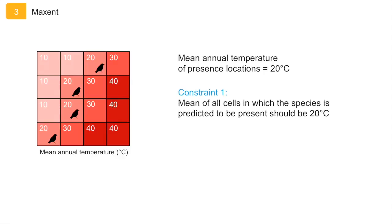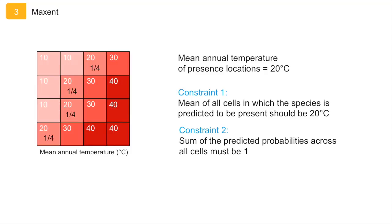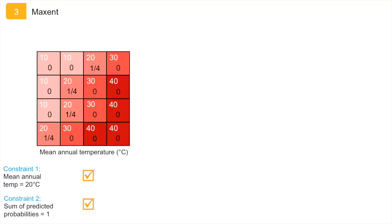The first constraint is that the mean annual temperature of all cells in which the species is predicted to be present must be 20 degrees. The second constraint is that the sum of the predicted probabilities across all cells in the landscape needs to be equal to 1. One of the possible distributions that meets both of these constraints is to give each cell where the species has been observed a probability of a quarter, and the other cells a probability of 0. The mean temperature of the cells in which the species is predicted to be present is 20 degrees, meeting constraint 1, and the probabilities also sum up to 1, which means constraint 2 is met.